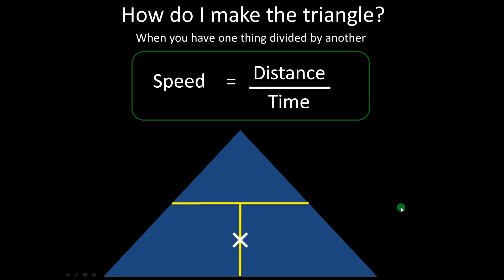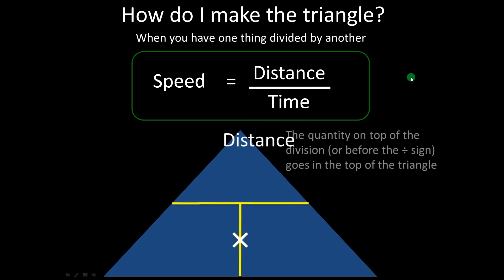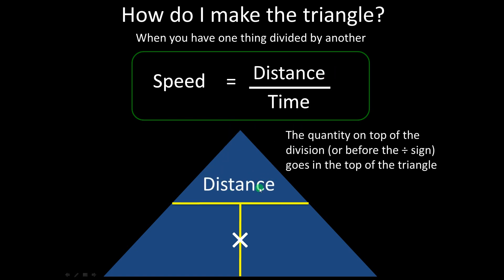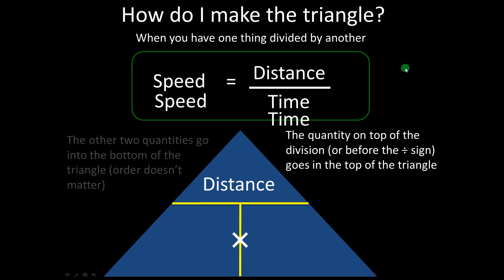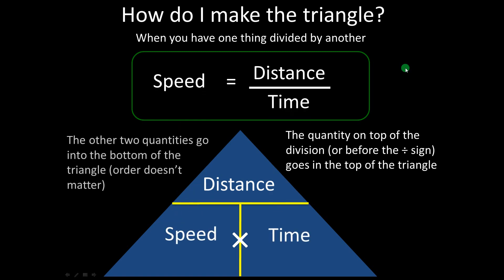If you've got a division in your equation it's slightly different. Whatever is on top of the division sign or on top of the fraction goes into the top of the triangle — top to top. And the remaining two quantities go into the bottom of the triangle. Again, it doesn't matter which way around they are; either order will still work.